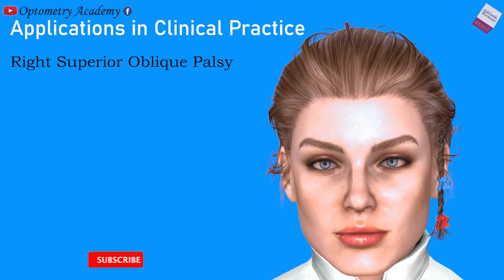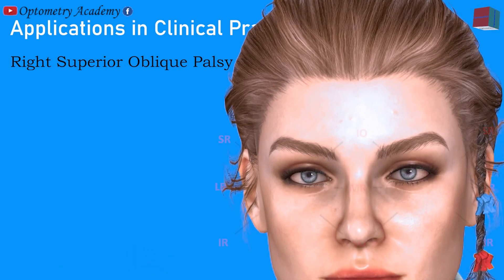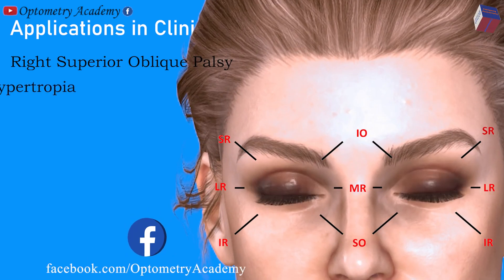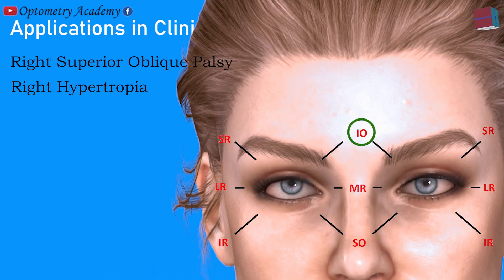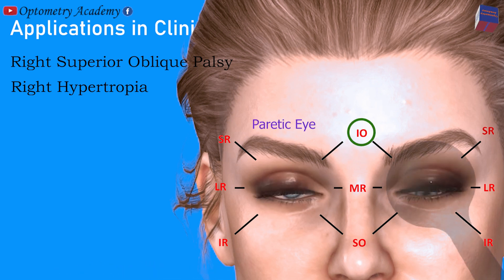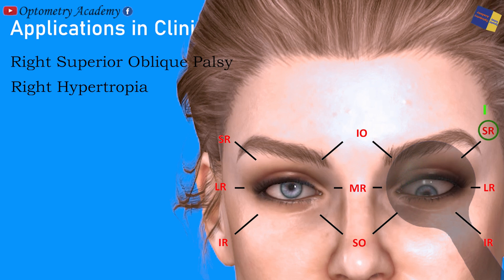Let's see how these laws apply to superior oblique palsy. A patient with superior oblique palsy may fix with either eye. In a right superior oblique palsy with the normal left eye fixing, the primary deviation is right hypertropia because of the unopposed action of its ipsilateral antagonist, the right inferior oblique. With the paralytic eye fixing, extra innervation flows to the weak right superior oblique to enable fixation. By Hering's Law, the same extra innervation flows to its yoke muscle, the left inferior rectus, causing it to overact, along with inhibition by Sherrington's Law of its antagonist, the left superior rectus.